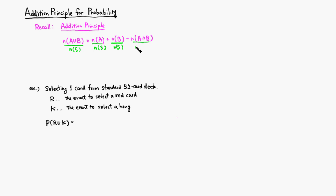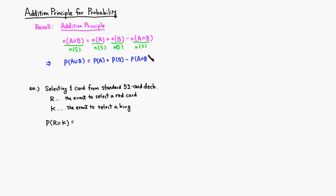Each of these terms becomes a definition of probability, and what you get is the addition principle for probability: the probability of A union B equals the probability of event A plus the probability of event B, minus the probability of A intersect B. You're essentially replacing N with P to get the addition principle for probability.